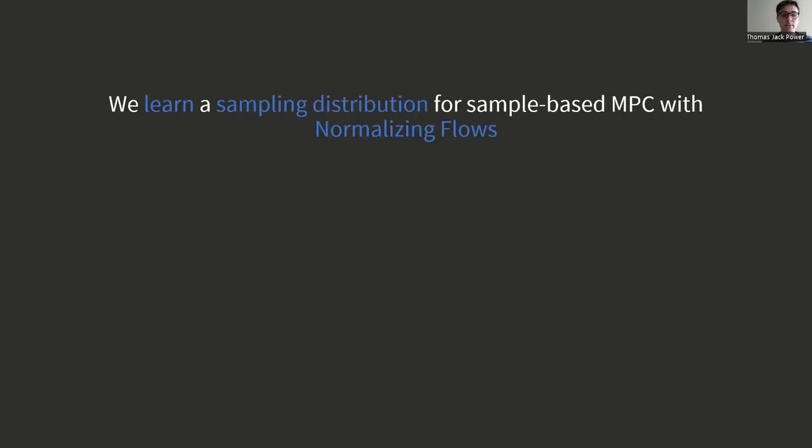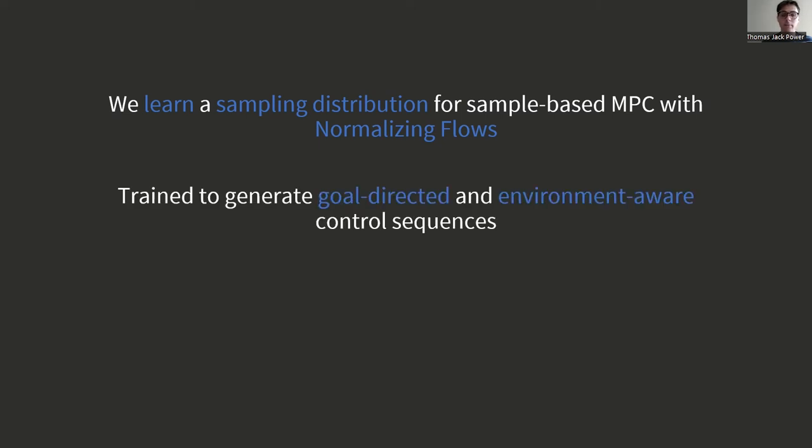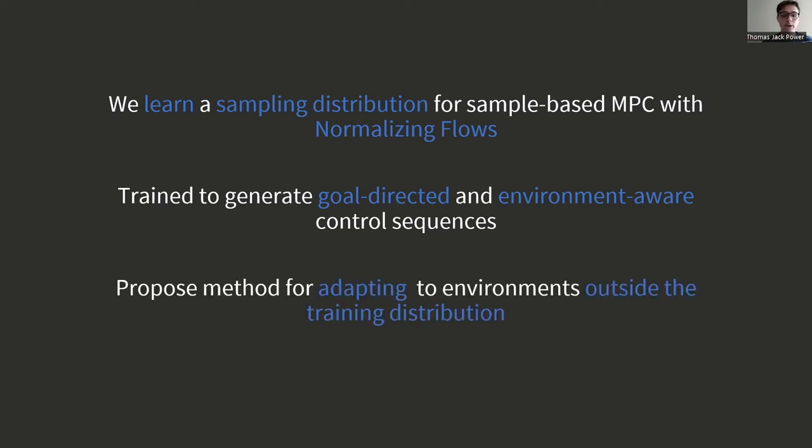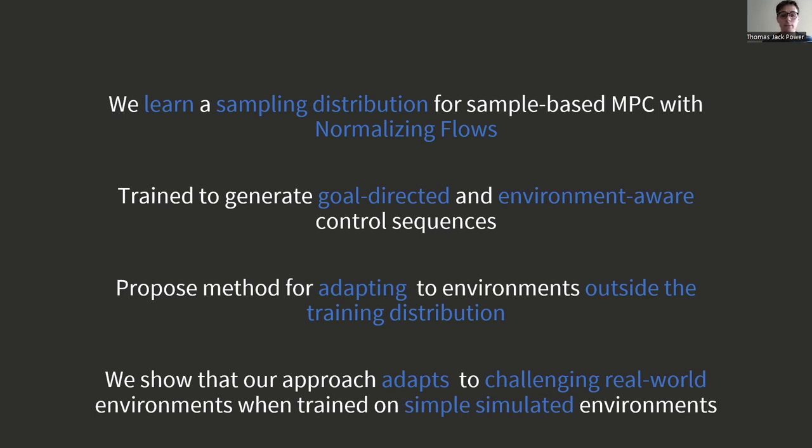Overall, we presented a method for learning sampling distribution for sample-based MPC, which generates goal-directed and environment-aware control sequences. We additionally propose a method for adapting to novel environments and show that our approach can adapt to challenging real-world environments despite only being trained on simple, artificially generated environments.